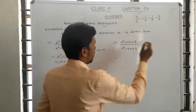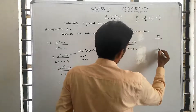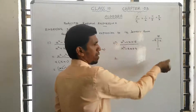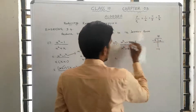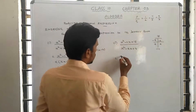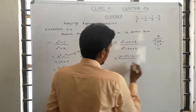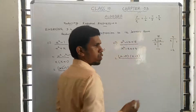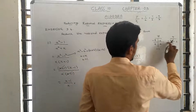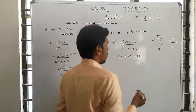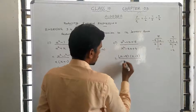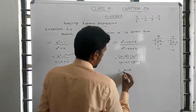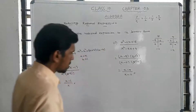Using the factoring method, multiply to get 18 and add to get minus 11. The factors are minus 9 and minus 2. So the numerator factors as x minus 9 times x minus 2, and the denominator x squared minus 4x plus 4 factors as x minus 2 times x minus 2. Cancel x minus 2, and the remaining answer is x minus 9 divided by x minus 2. This is the simplification result.